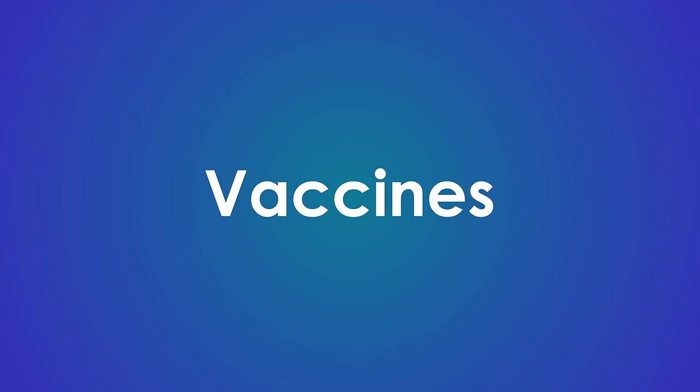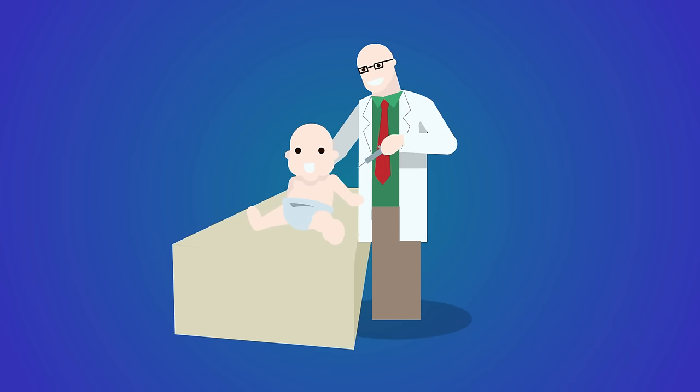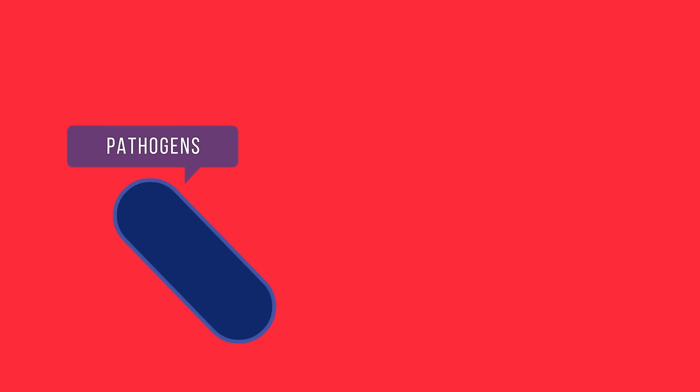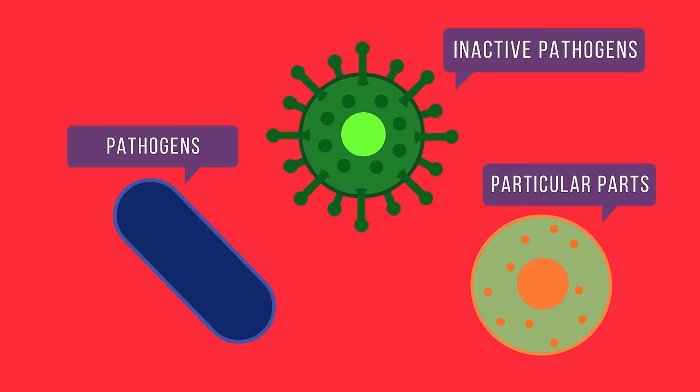Now that we know about immunological memory, what about vaccines? Well, it simply means that we generate this memory effect artificially and at an early stage to prevent future disease. This means we inject a weakened version of pathogens, inactive pathogens or just particular parts of pathogens into the individual we want to protect.